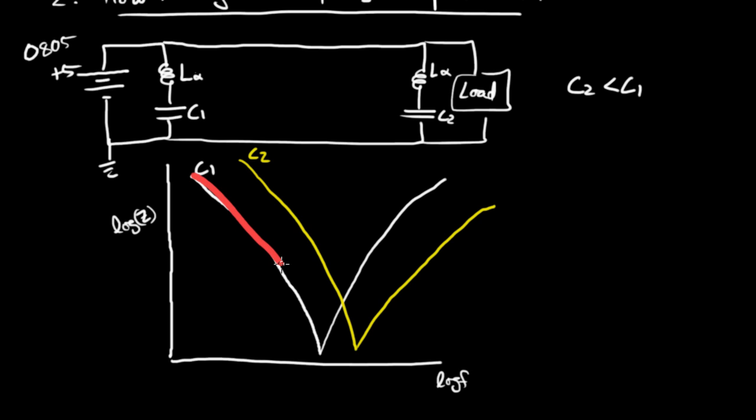It would come down, follow this guy, and then it would come up. There would be a peak, which may be a very sharp peak, and then it would come down and then follow that back up like this.